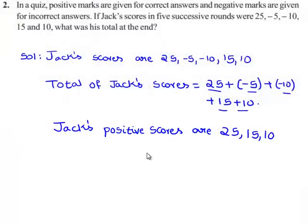We will add them up. That is equal to 25 plus 15 plus 10. That gives, 25 plus 15 is 40 and 40 plus 10 is 50. So, the total of Jack's positive scores are 50.